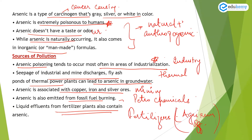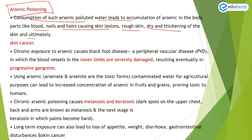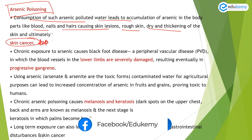What do we understand by arsenic poisoning? Consumption of arsenic-polluted water leads to accumulation of arsenic in body parts such as blood, nails, and hair, causing rough skin, drying, thickening of skin, and ultimately skin cancer. Arsenic is carcinogenic primarily because it can cause skin cancer.